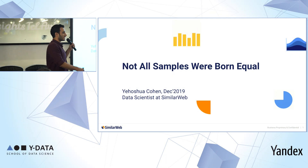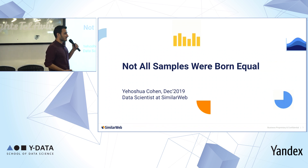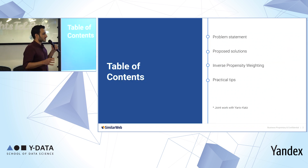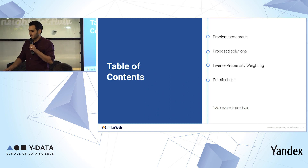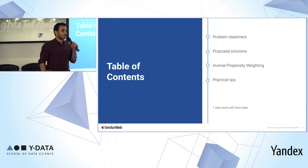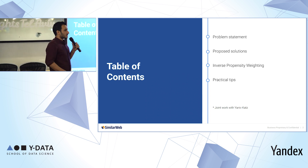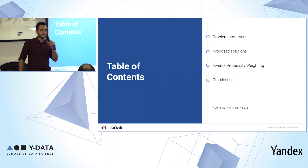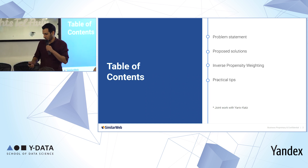My name is Yoshua Ashuki-Kohen and I'm a data scientist here at SimilarWeb. Today my talk is about samples that were not born equal. Here's the agenda: we'll begin with a problem statement, then go over some proposed solutions, then talk about inverse propensity weighting, which is the main part of this talk, and end with some practical tips. This work was done with Yaniv Katz, who is a machine learning researcher here at SimilarWeb.